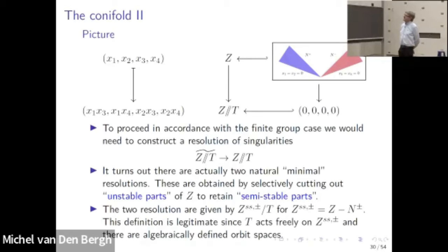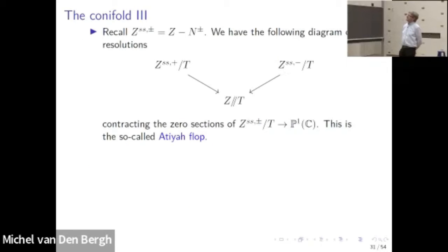It turns out these semi-stable parts actually give you resolutions. I take Z and, for example, take out N⁺ to give Z^{ss+}. On that part, T acts freely, so there is an honest orbit space which exists algebraically. Taking the orbit space gives a resolution. This configuration of spaces — the quotient and two resolutions — is very classical. It's called the Atiyah flop.